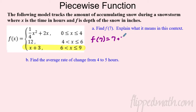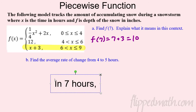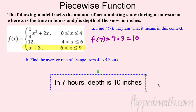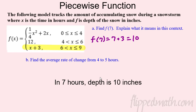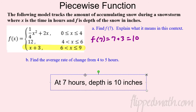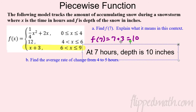To find f(7): hour 7 falls between 6 and 9, so use the third piece of the function. Plug 7 into that expression — the result is 10. So at the seven-hour mark, the snow depth is 10 inches. That's a snowstorm right there.